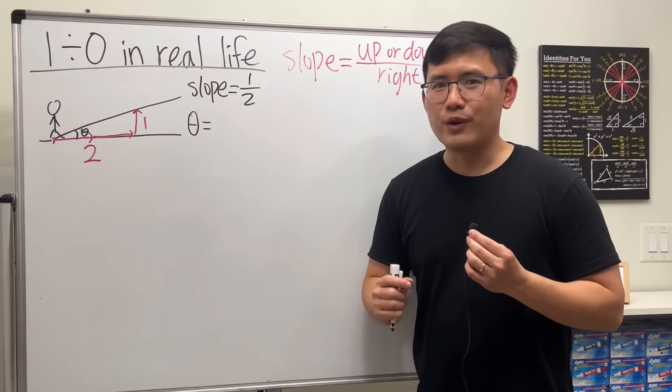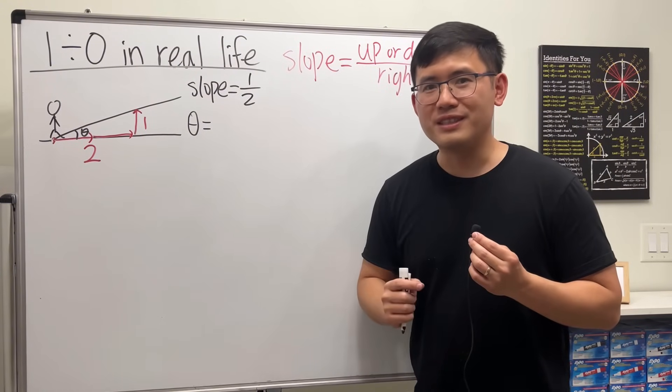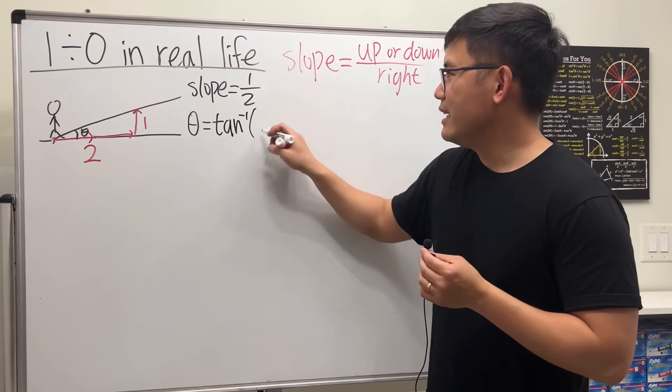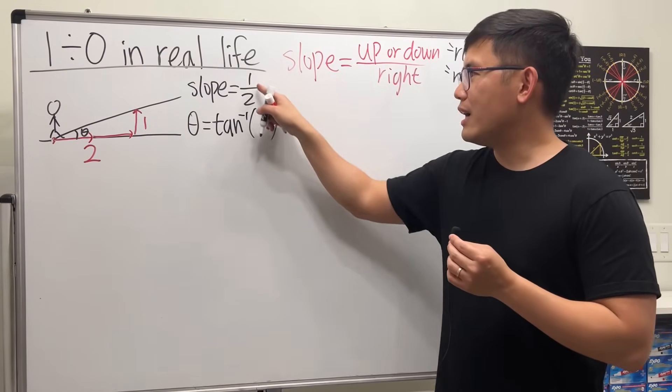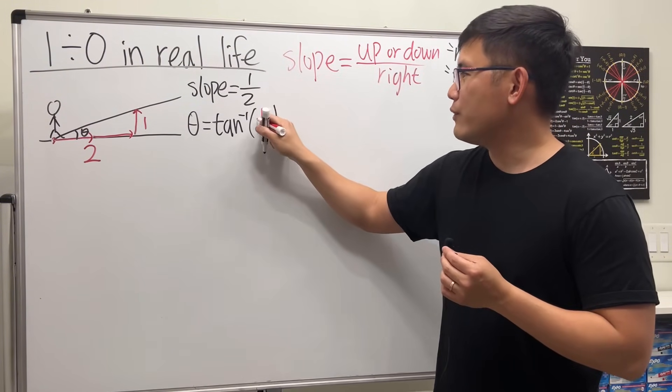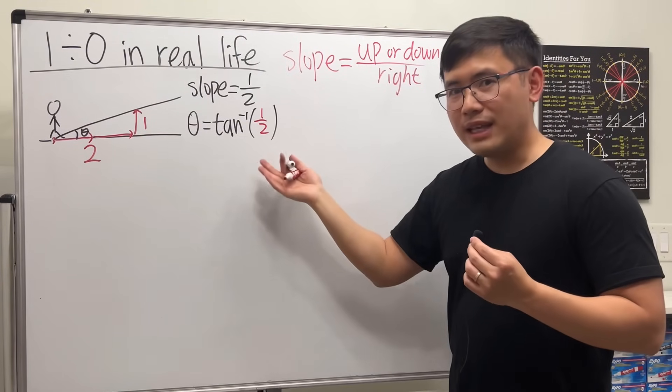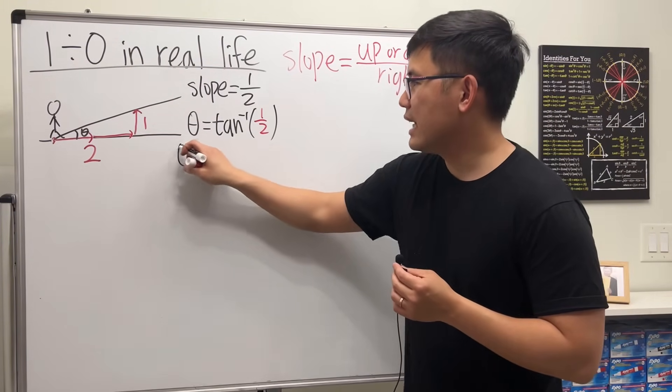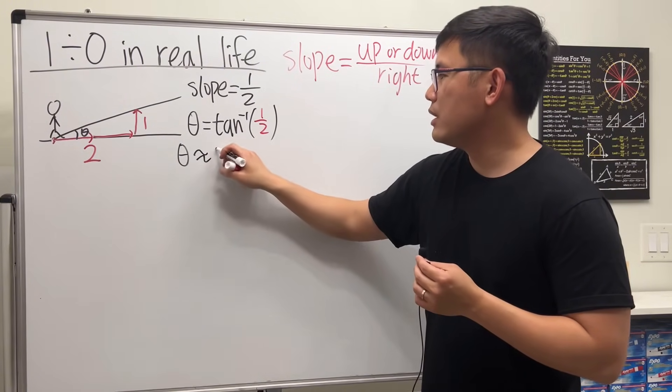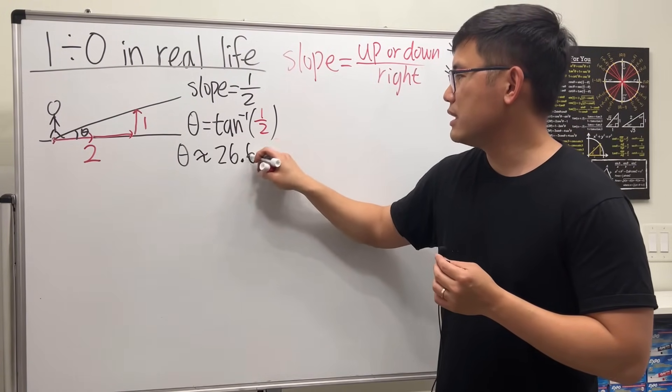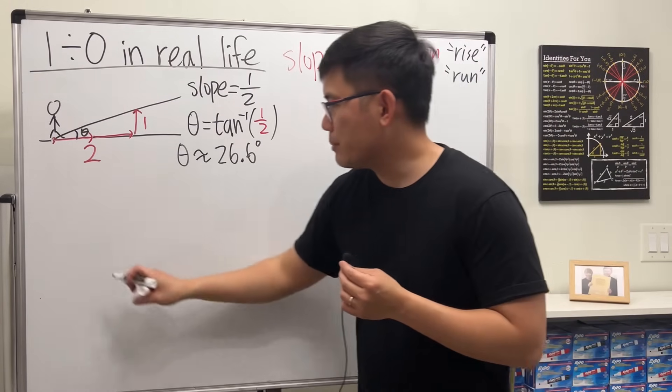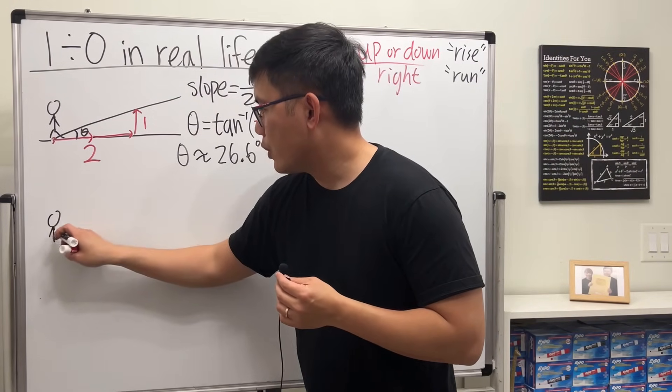You just enter whatever the slope is inside - we have one over two. Now for this one, you just use a scientific calculator and you'll see that theta is approximately 26.6 degrees.